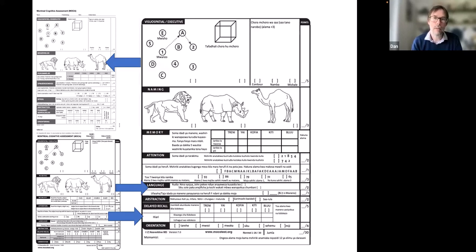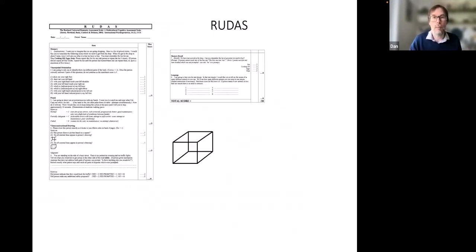And it's interesting when you look at the Swahili version, they use the word train or treddy, and there's only one train in Kenya that goes from Nairobi to Mozambique, and they were like, you know, why wouldn't they use bus rather than train? So there are problems with direct translations, and the direct translation of the sentence repetition, which in English is, I only know that John is the one to help today, and the cat always hid under the couch when the dog's in the room, is a complex sentence.